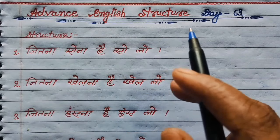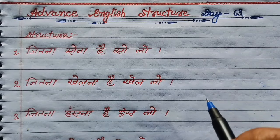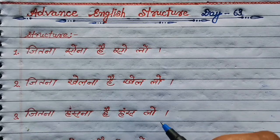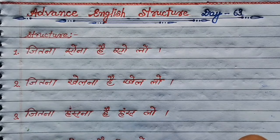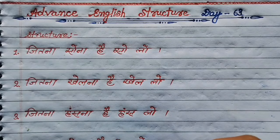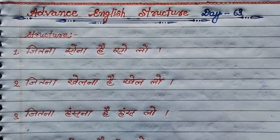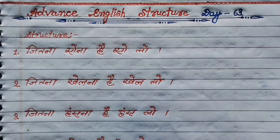Today is advanced English structure day 63. Guys, हम काफी बार अपने day-to-day life में कुछ इस तरह के sentences को बोला करते हैं, जिसकी English हमें मालुम नहीं होती है। जैसे कि English में बोलने की बारी आती है, तो हम लोग अटक जाते हैं। तो guys, आज का जो यह class है, आप सब के लिए बहुत ही helpful होने वाली है। यदि आप इस तरह के sentences को सीखना चाहते हैं, तो बने रहें इस वीडियो में end तक। So, without delay, let's get started.